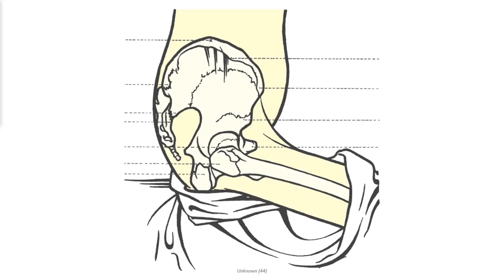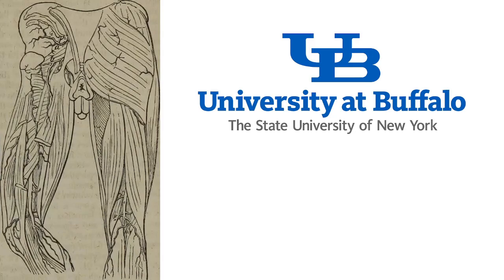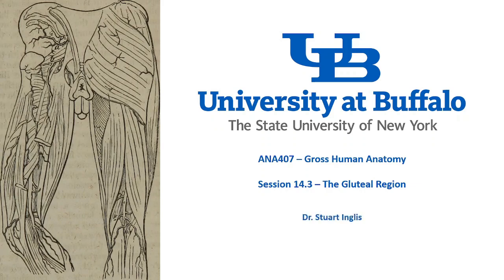As we saw with the upper limb, the lower limb can be divided into a series of compartments with muscles performing similar functions and a designated neurovascular supply. We start with a compartment that is more of a transition between the torso and the lower limb — this is the gluteal region. In this final session, we look at the muscles and the neurovascular supply to the gluteal region, which can be thought of as a transition region between the torso and the lower limb.